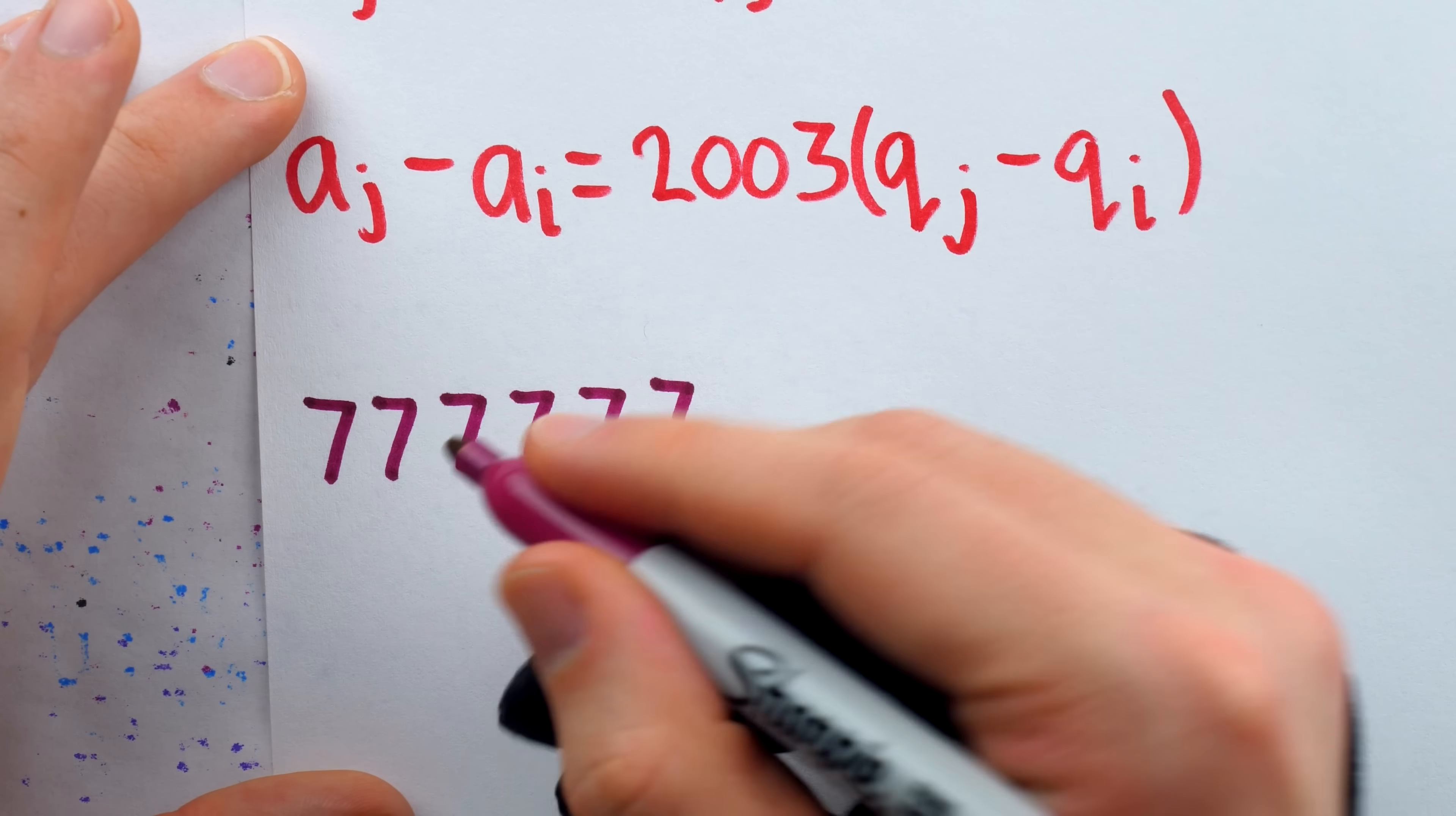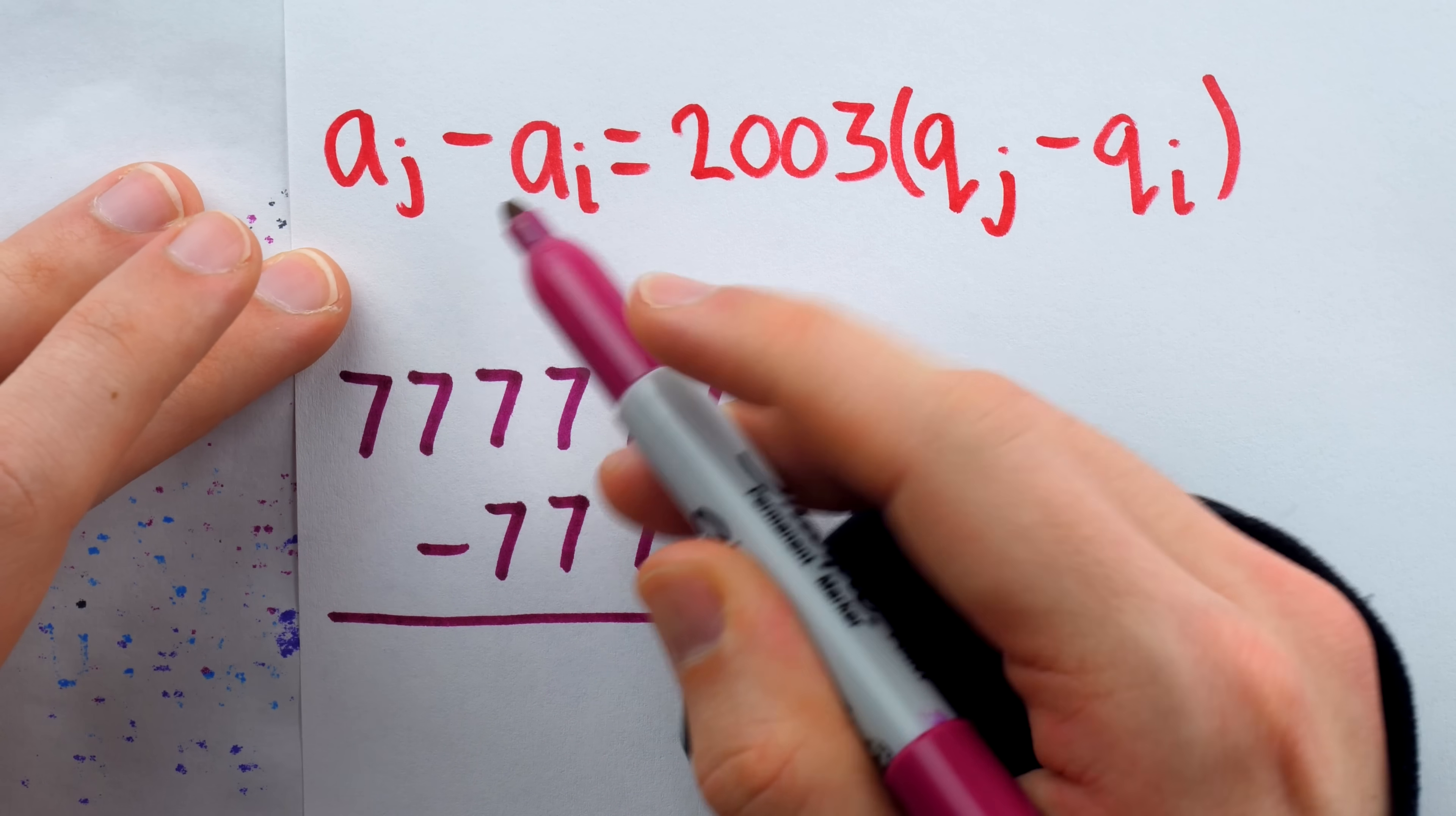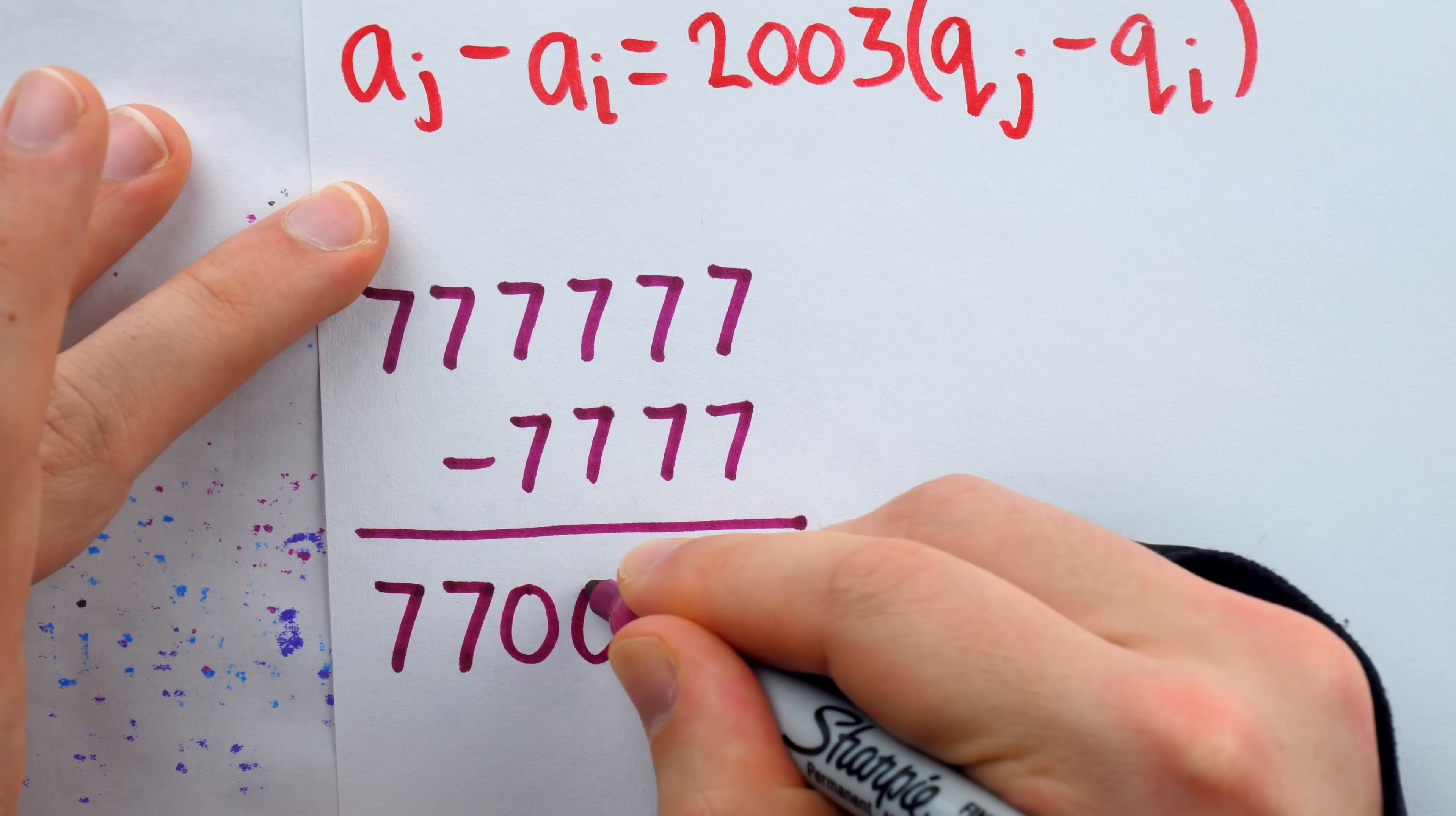And then what about A_i? What is that? Well, that's also just a bunch of sevens, and we are subtracting these two terms. What happens when we subtract them is that all of the sevens from A_i cancel out all of the corresponding place value sevens from A_j. What we're left with is the excess sevens from A_j, and then a bunch of zeros.